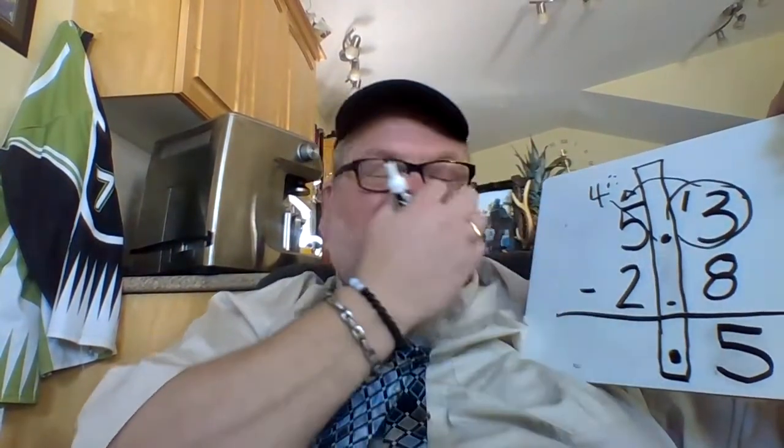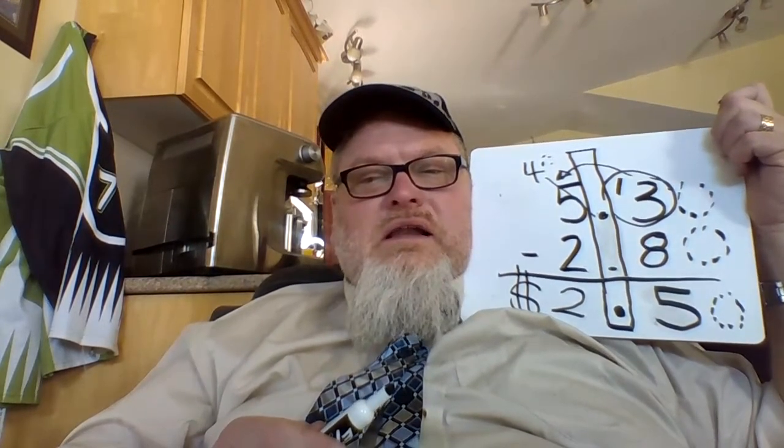You have four dollars take away two dollars, you get two. With the dollar sign in place, that's two dollars and fifty cents. Five dollars and thirty cents take away two dollars and eighty cents equals two fifty — $2.50. If you're working at an A&W, McDonald's, or even a little canteen at home, this is exactly the kind of math you'd use.